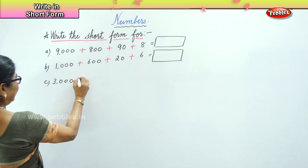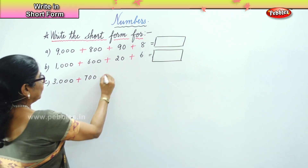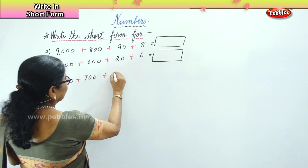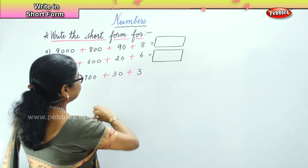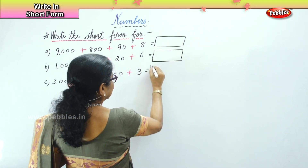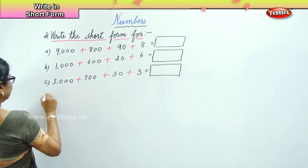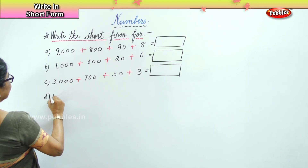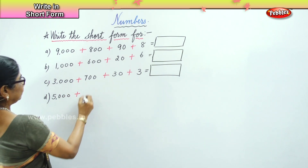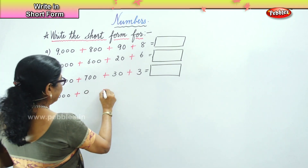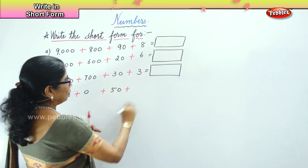3000 plus 700 plus 30 plus 3. All right? Next: 5000 plus 0 hundreds plus 50 plus 5.